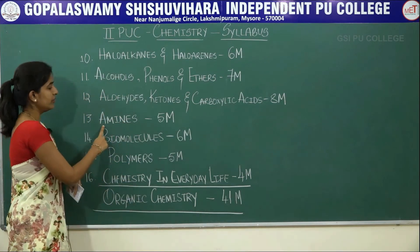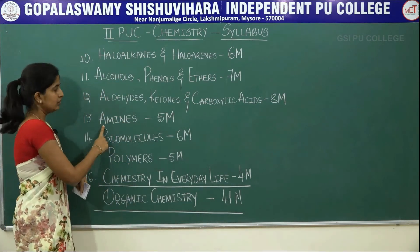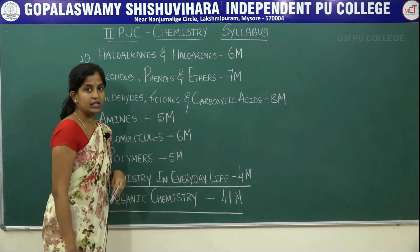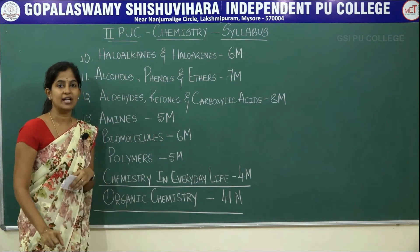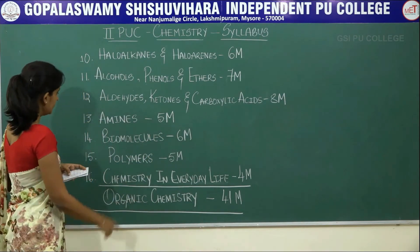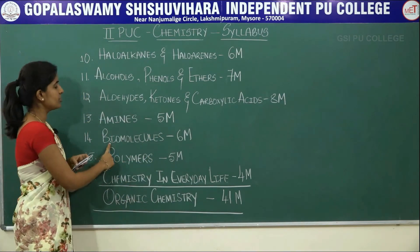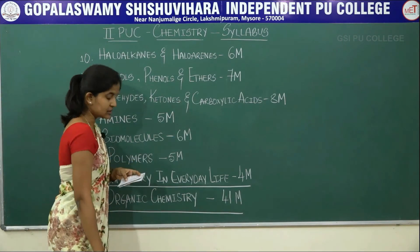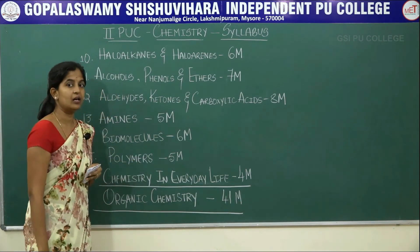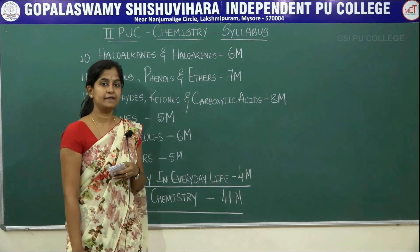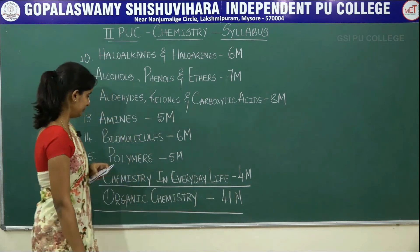The next chapter is amines. Its total weightage is 5 marks, consisting of one 5-mark question. The following chapter is biomolecules, with a total weightage of 6 marks, having a 1-mark question and a 5-mark question.